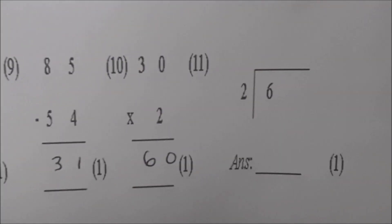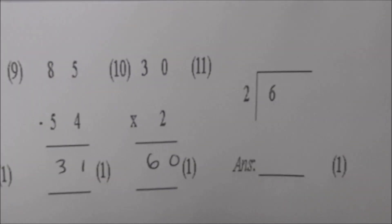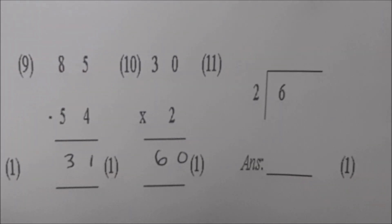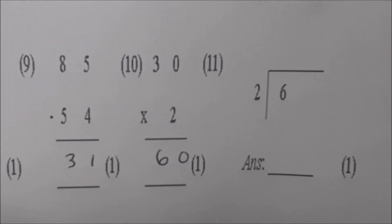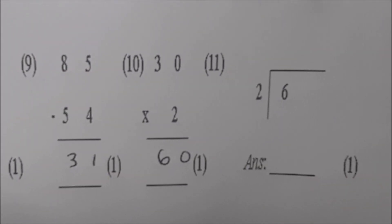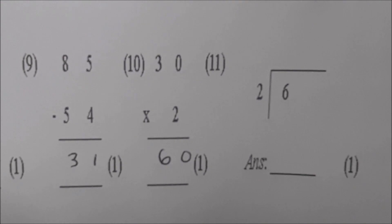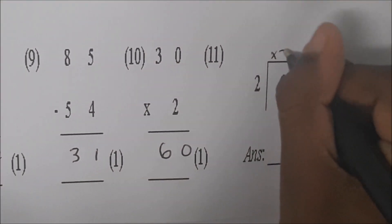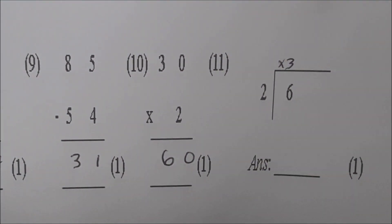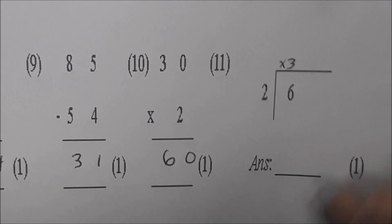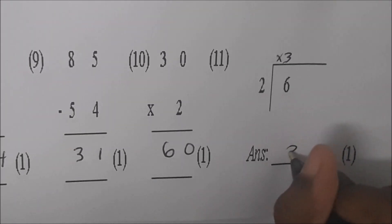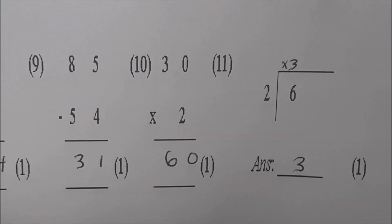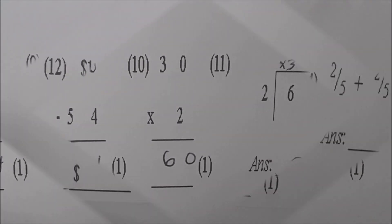Now you're dividing for number eleven. It's six divided by two. What's six divided by two? Three. Three times two is six. Very good.